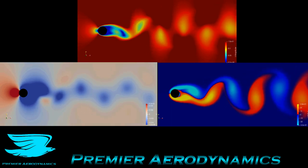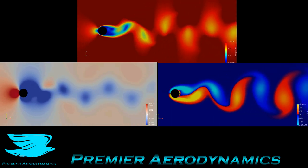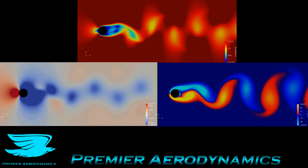We have at the top the velocity, on the right bottom we have the vorticity, and on the left bottom we have the pressure. So these are all three important parameters.